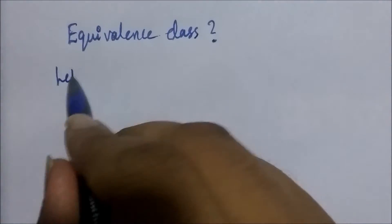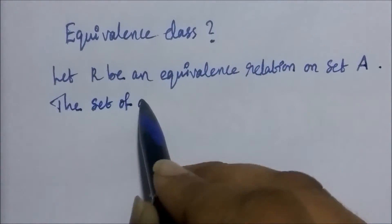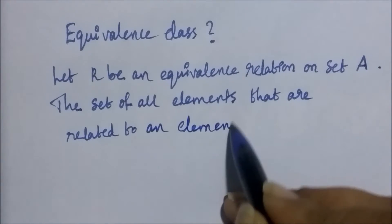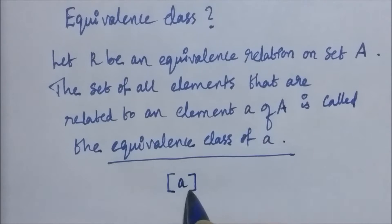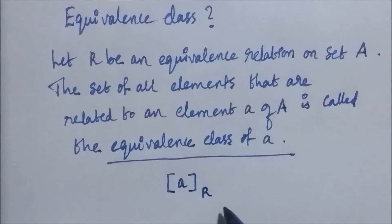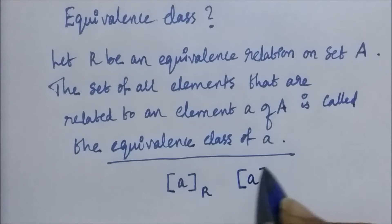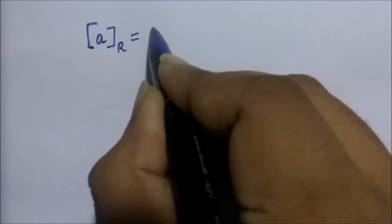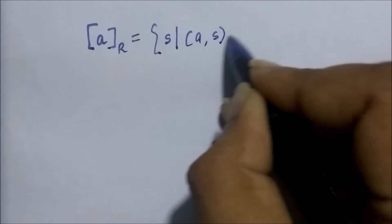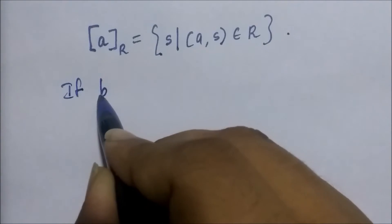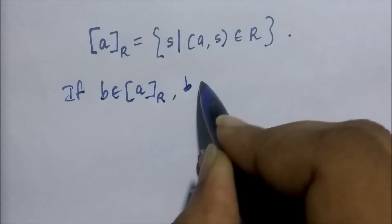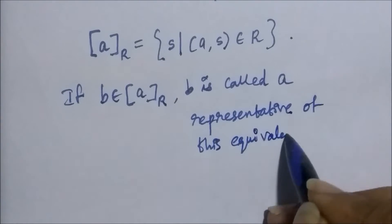Let's see what is an equivalence class. Let R be an equivalence relation on set A. The set of all elements that are related to an element small a of the set capital A is called the equivalence class of the element small a. It is denoted with a written within square brackets and with a subscript R. When only one relation is under consideration, we can delete the subscript R. In other words, the equivalence class of A is the set of all s such that A, s belongs to the relation R. If B belongs to this equivalence class, then B is called a representative of this equivalence class. Any element of a class can be used as a representative.